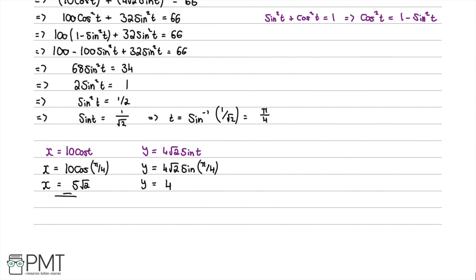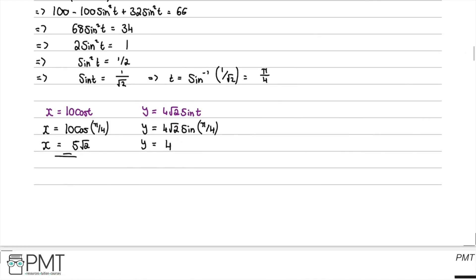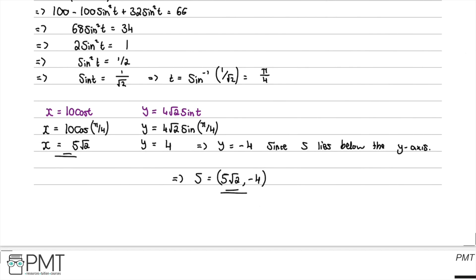Looking at the diagram, we know by symmetry above and below the axis that the points of intersection all have y-coordinates of either +4 or -4. Since S lies in the fourth quadrant, it is below the x-axis, so the y-coordinate must be negative 4. Therefore S has coordinates (5√2, -4).